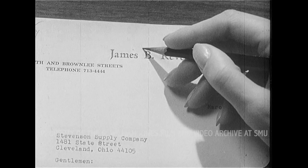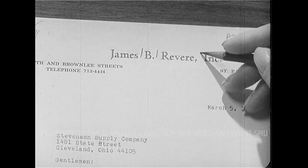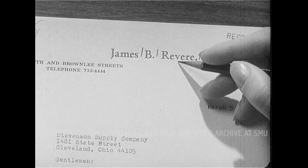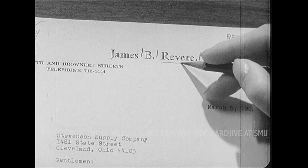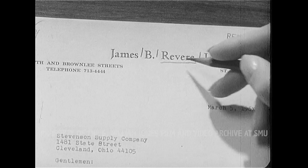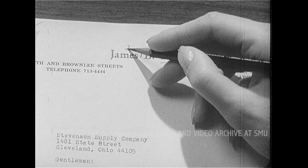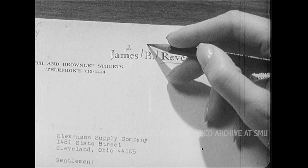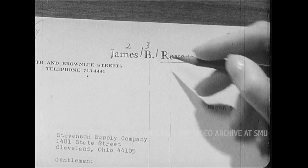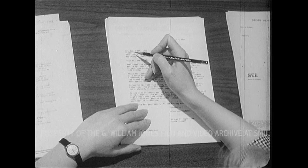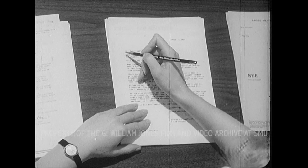First, the words of the letterhead are separated with slash marks. Then the primary unit — Revere in this letterhead — is underscored. It's the word that best distinguishes this company's name from others. The secondary unit, James, helps distinguish this from other Reveres in the files. And a third unit, B, separates it from other James Reveres. Such marks are coding marks; like guides in a file cabinet drawer, they help us separate records.